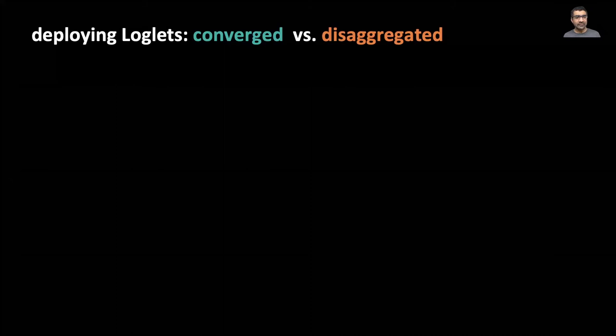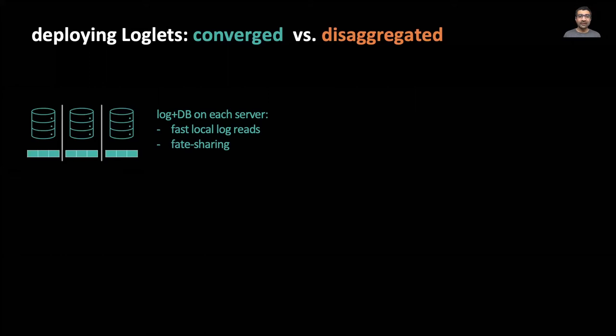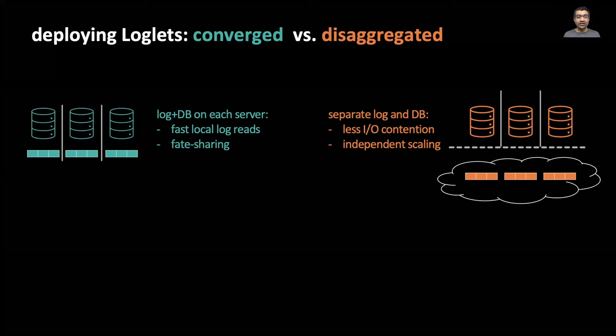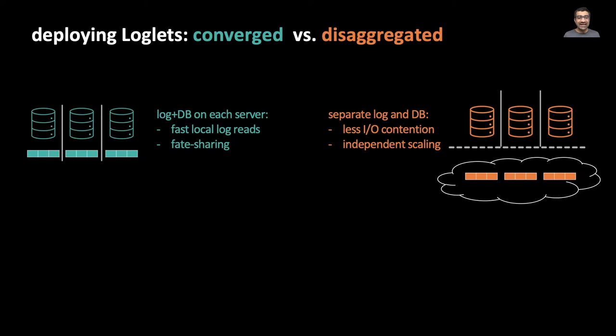As we said before, Delos loglets can be converged or disaggregated. In a converged setup with the native loglet, each server runs both the database and the native loglet log server. This has the benefit of enabling fate sharing between the database and the log. The log cannot fail independently of the DB. Or in other words, the DB does not have an external dependency. In a disaggregated setup, the log runs across the network on a separate set of servers. This allows the IO of the log and the DB to be separated physically. It also enables each tier to be scaled independently.